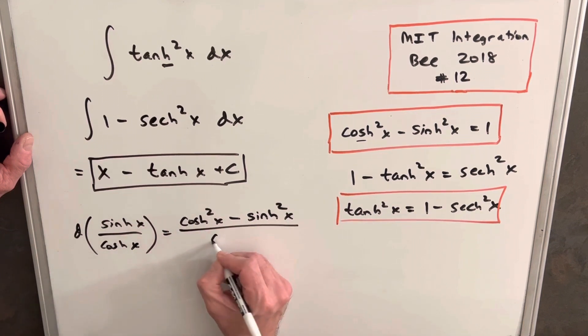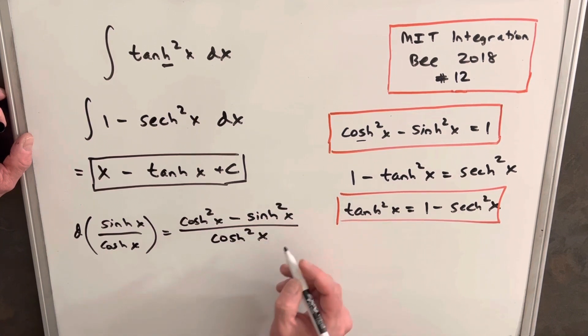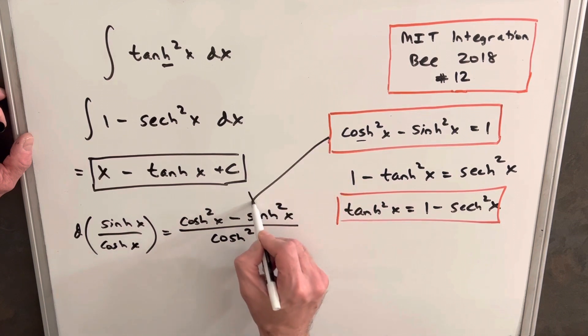Then we just want the bottom squared. So we'll have hyperbolic cosine squared. But then we can come back and use, we already have this identity from earlier, that tells us that this whole thing is just one.